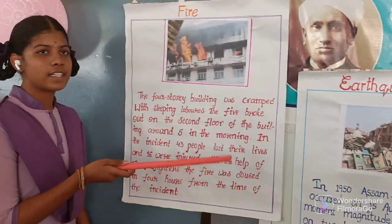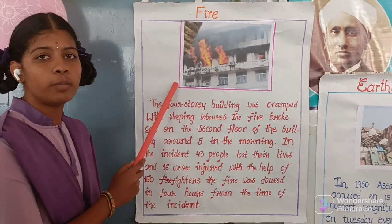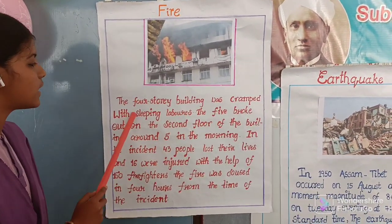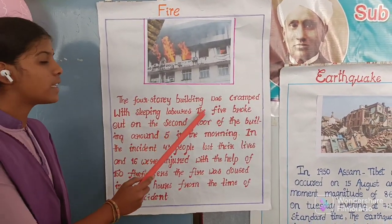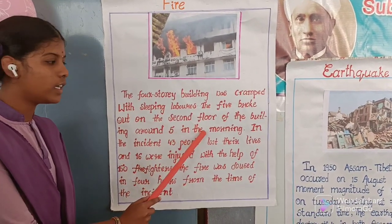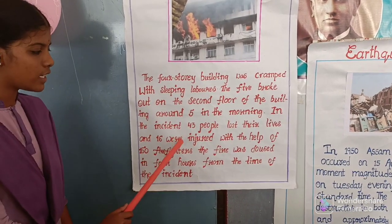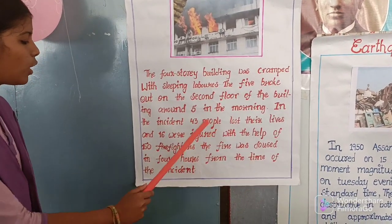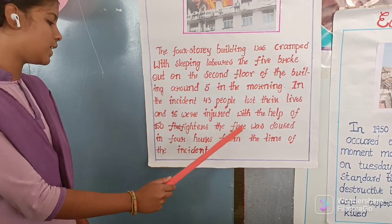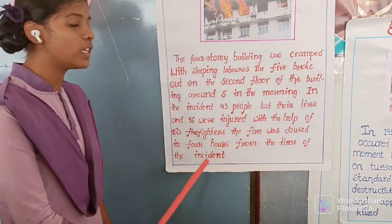These are some incidents of fire accidents. In the Kumbakonam fire accident, a four-story building was cramped with sleeping laborers and the fire broke out around 5 in the morning. In this incident, 43 people lost their lives and 16 were injured. With the help of 150 firefighters, the fire was controlled within 4 hours from the time of the incident.